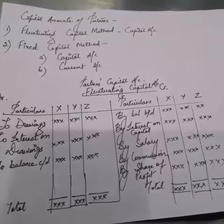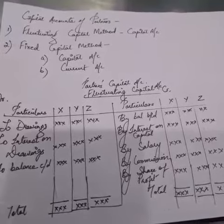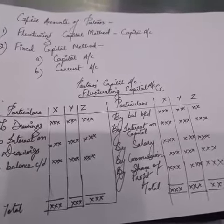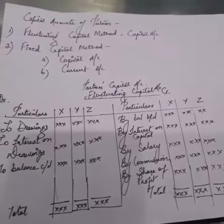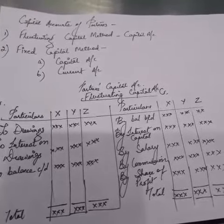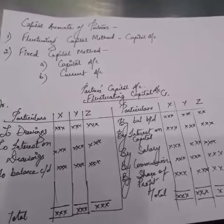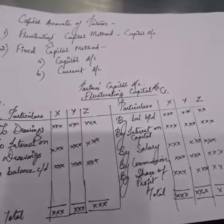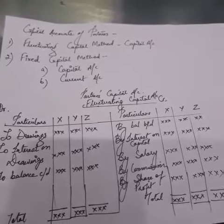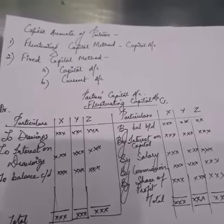We will now move on to the next topic: the capital accounts of the partners. There are two methods generally used to maintain the capital account of partners in a partnership form of business. The first is the fluctuating capital method, under which only the capital account is maintained. The second is the fixed capital method, under which both the capital account and the current account are maintained, because the capital here remains fixed.